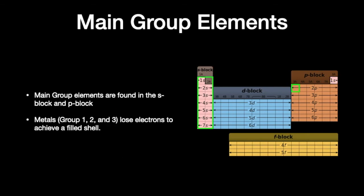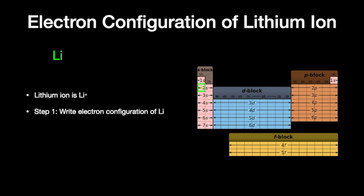Now let's look at main group elements in groups 1, 2, and aluminum in group 3. These are going to lose electrons to achieve a filled shell. Remember that metals form cations and lose electrons to become positive. Lithium ion is Li+. We've memorized it's in group 1 with a plus 1 charge — now we can explain why. First, we write out the electron configuration for lithium: it's 1s2, 2s1, and we stop there because lithium has three electrons.